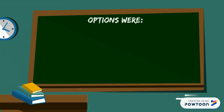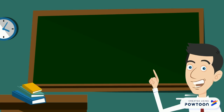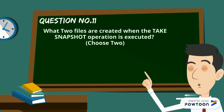Let's review the options again. Guaranteeing access to a resource can only be achieved by configuring a reservation, so options B and D cannot be the answer. Prioritizing access to a resource during contention can only be achieved by shares, so the answer is option A — during contention.